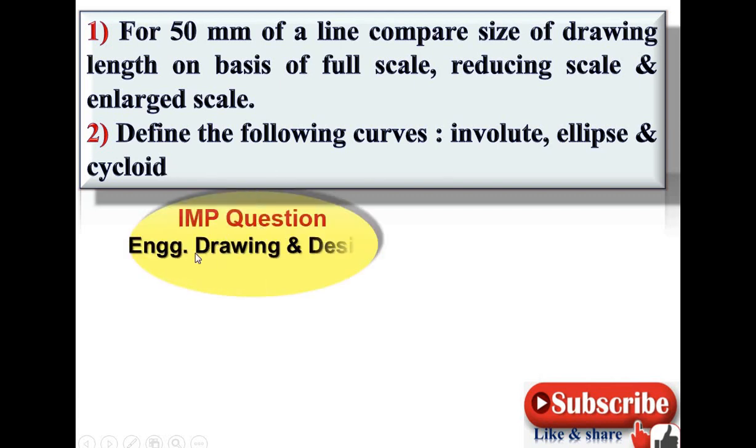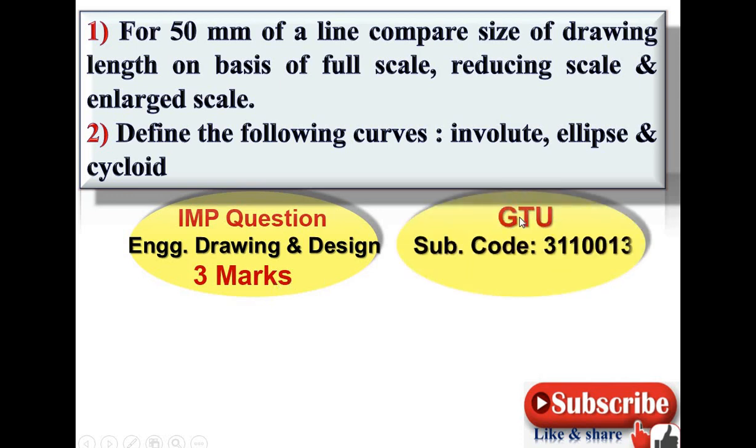These are very important questions for the subject engineering drawing and design, and each question has a weightage of three marks in the GTU examination. GTU means Gujarat Technological University. The subject code is 3110013, short subject name is EGD, or for diploma students it is ED.